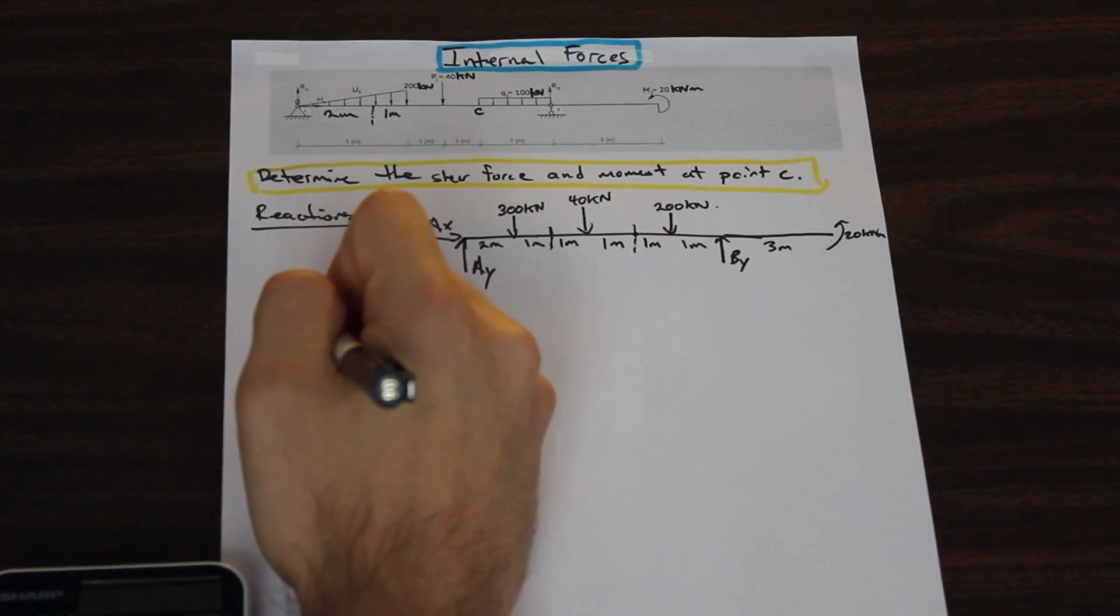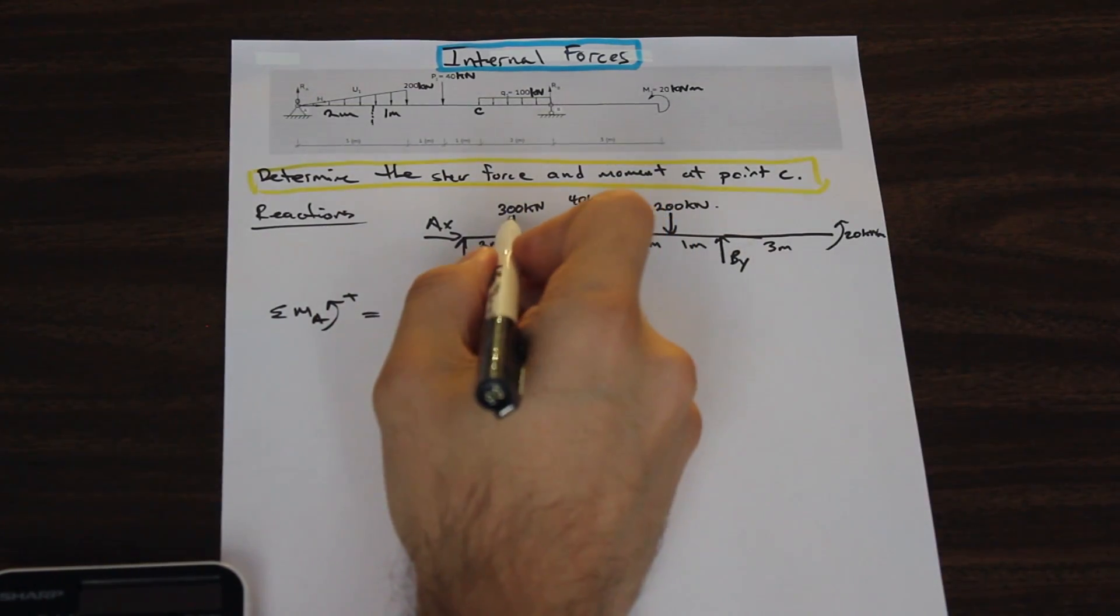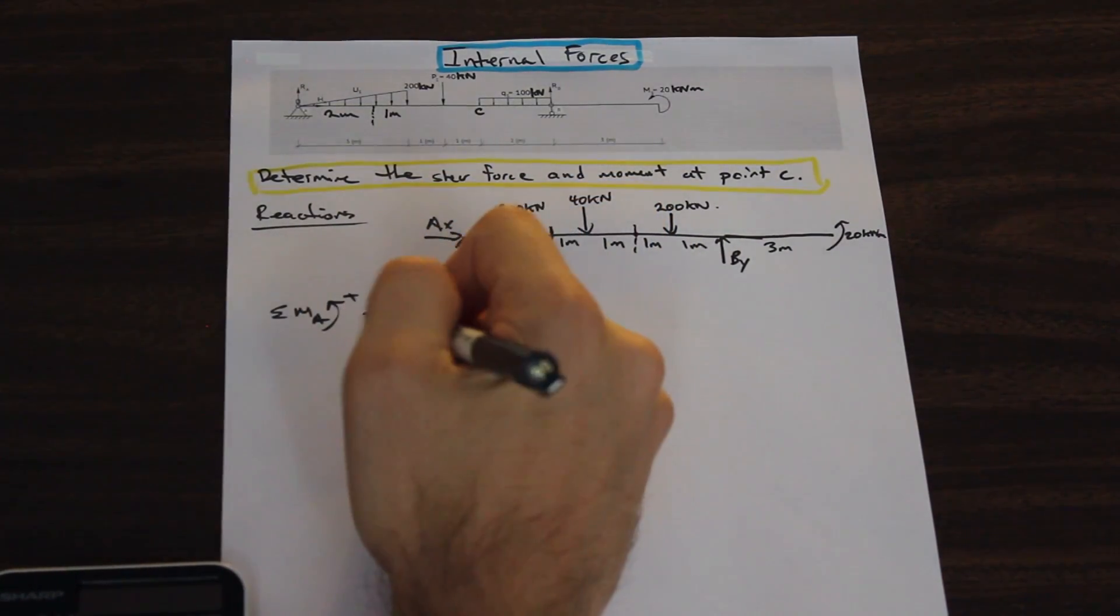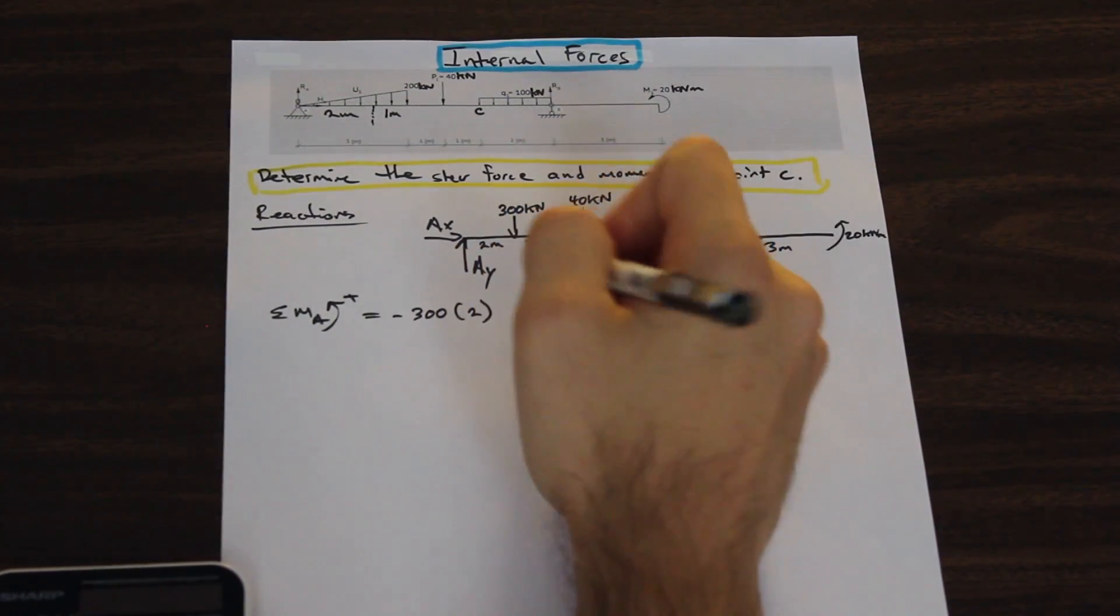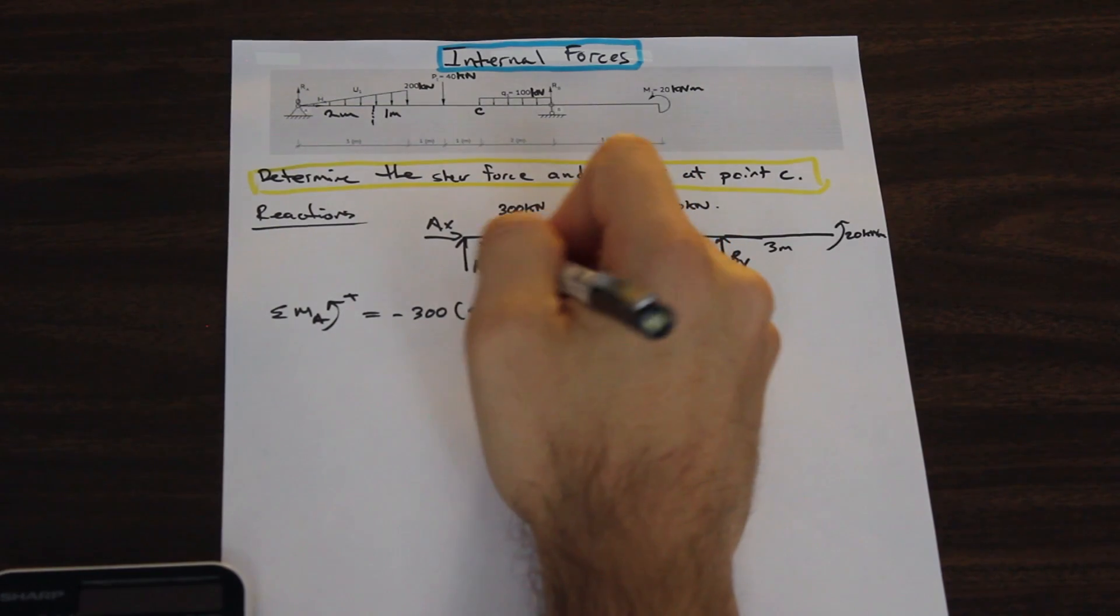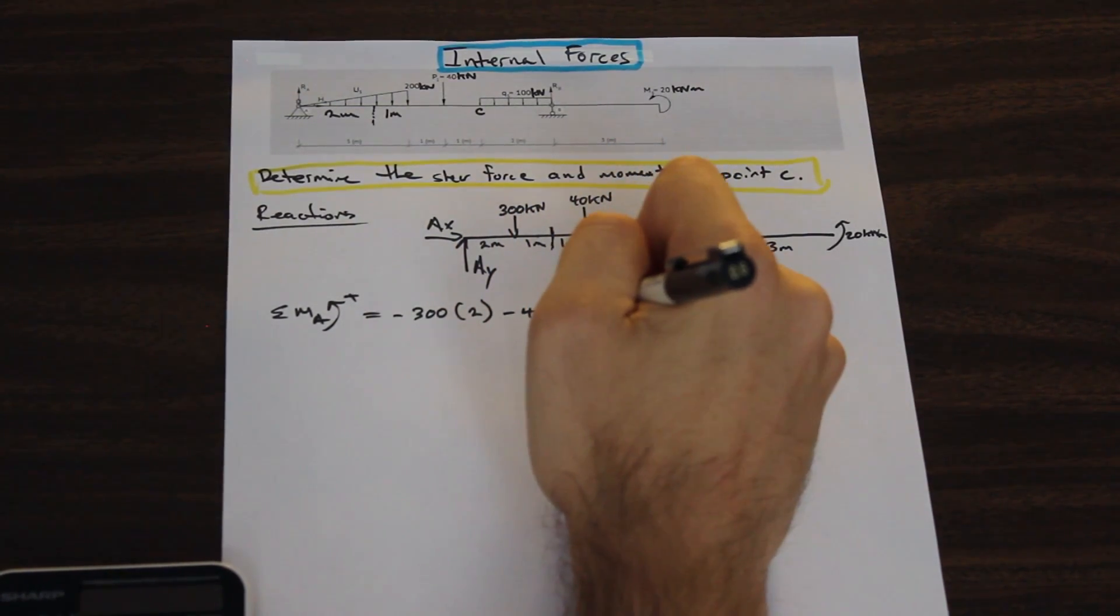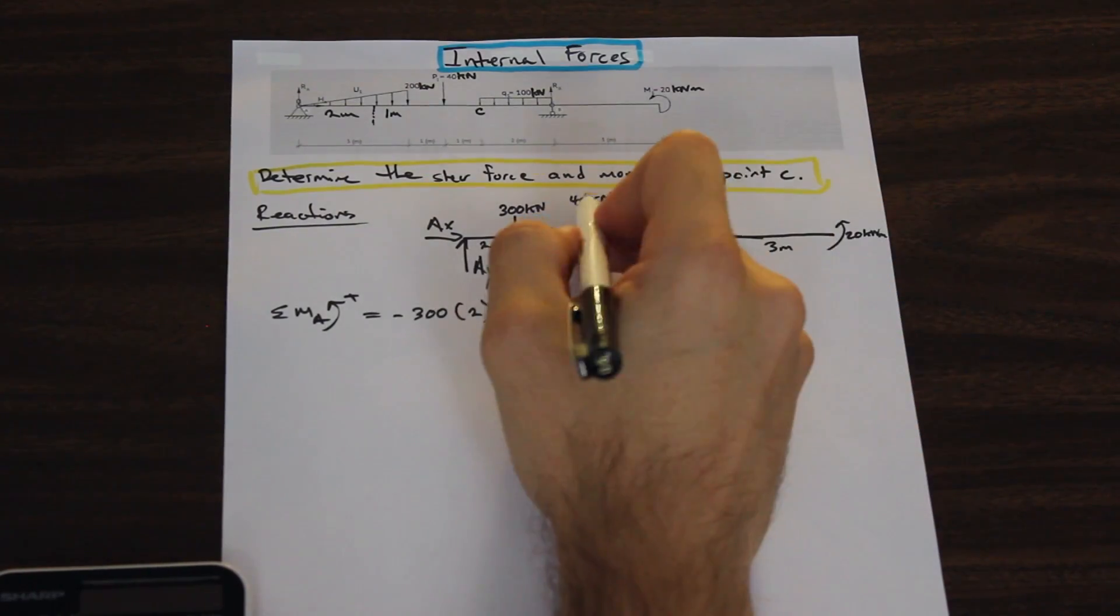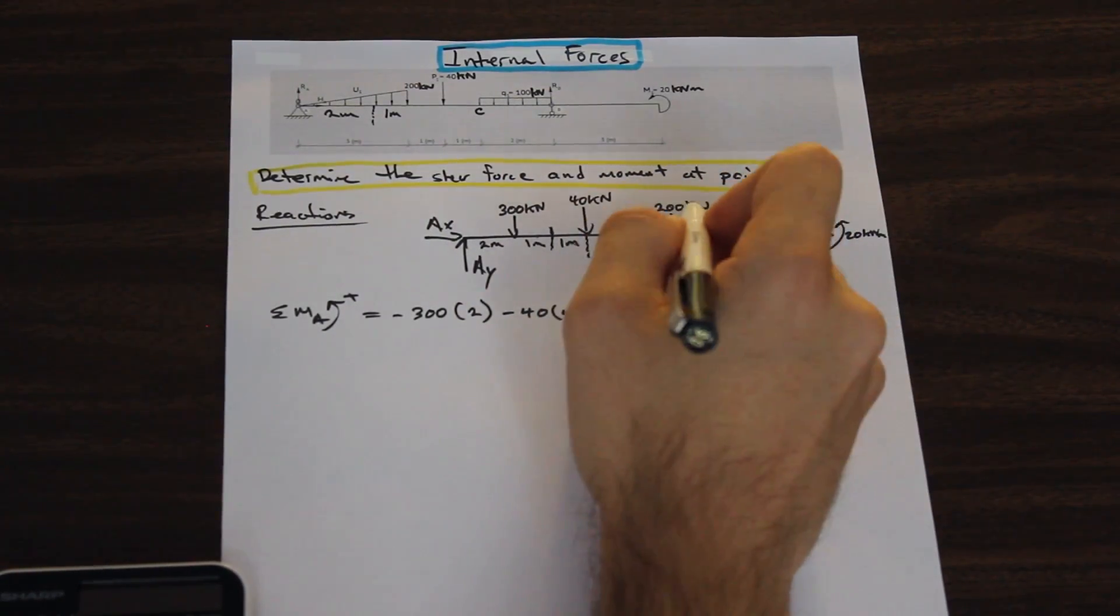Let's take the moment about point A. So we have a 300 kilonewton force that's acting negative. And it's 2 meters. We have a force that's acting downwards again, so that's going to be negative. And that's 4 meters. So a 40 kilonewton force acting 4 meters from point A. We have a 200 kilonewton force that's also acting down.